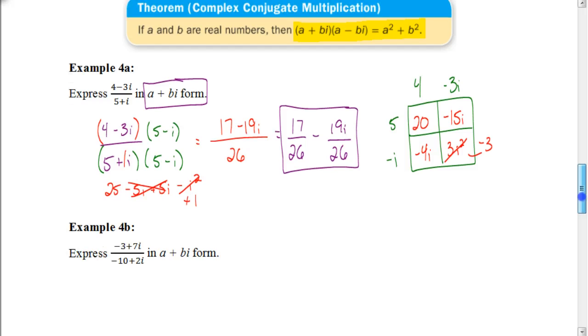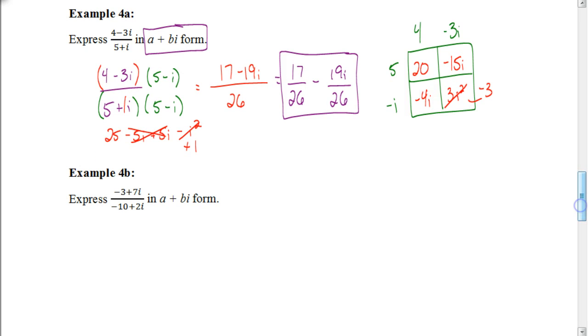So I want you guys to try this next one on your own, where we have negative 3 plus 7i over negative 10 plus 2i. Just to give you a hint on this one, when you break it up into two fractions, this one will be able to be reduced. You want to make sure that you reduce both fractions completely in order to get to your final answer. So pause the video and hit play when you're ready to check to see if you have the correct answer.